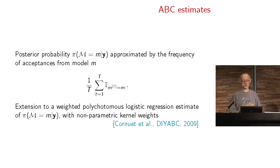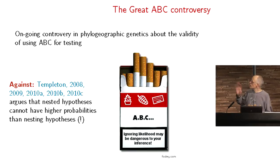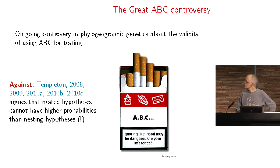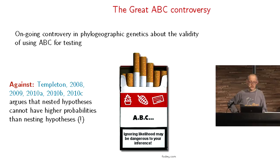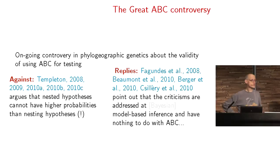Interestingly, in the population genetics literature there is a long sequence of back-and-forth papers about the validity of using ABC for model choice. This was mostly run by Alan Templeton, who was promoting a different approach called nested clades, and who never gave up—there is a very long sequence of papers where he states that ABC is incorrect, and then of course the same collection of papers stating the opposite.